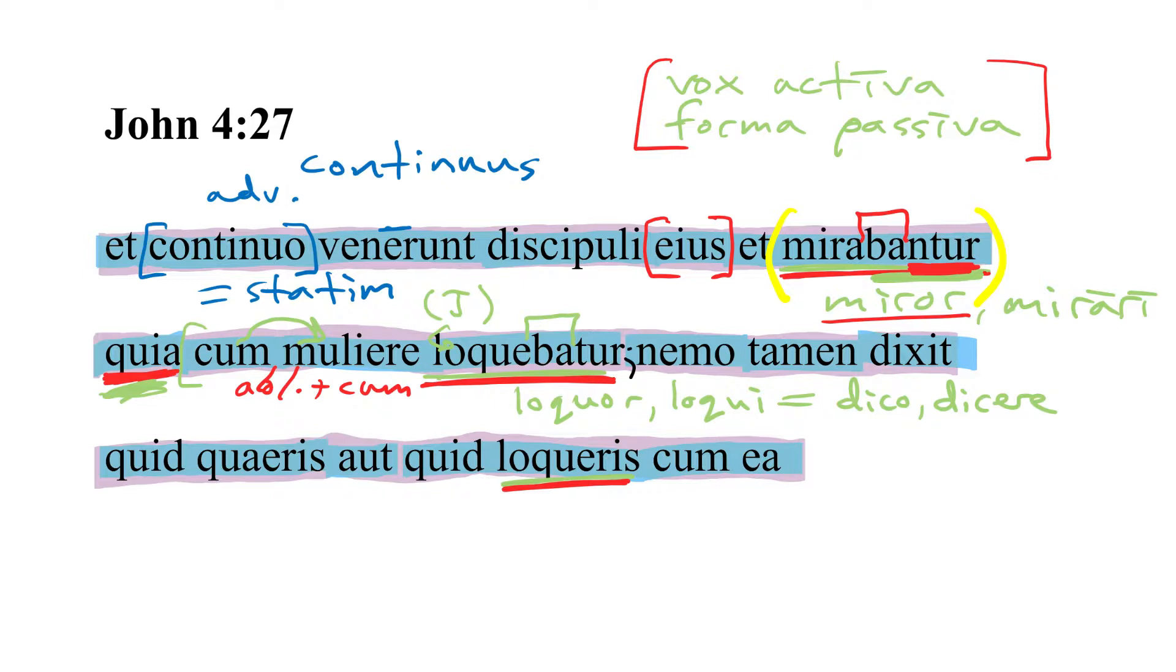Now here we have to drop some punctuation and look right to tamen which here probably is equivalent to something like English but or nevertheless. But nobody, nemo, dixit, said, and then here is what nobody said. You can put a little series of quotations here. These are the things that nobody said and these are questions.